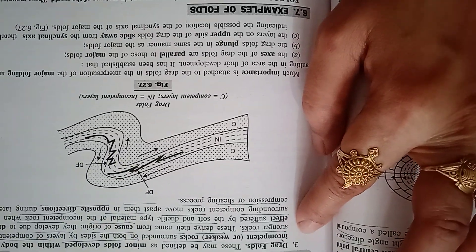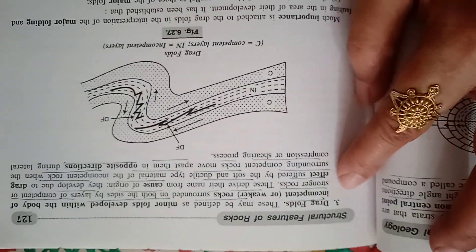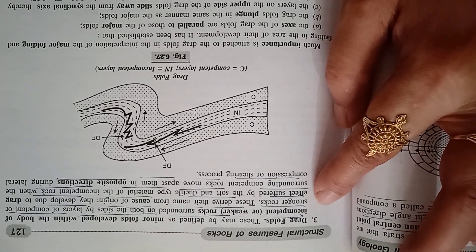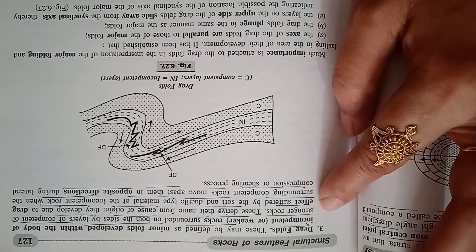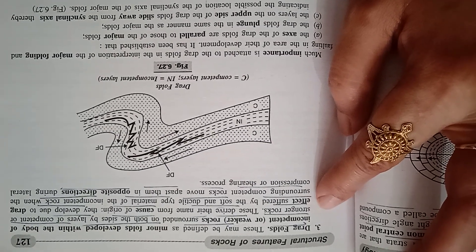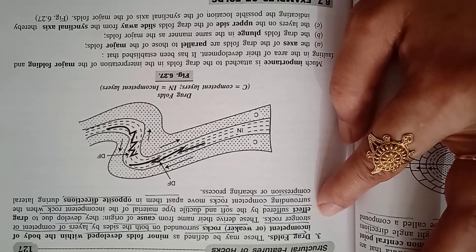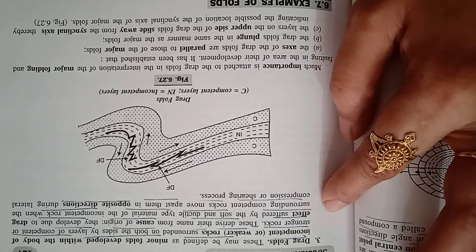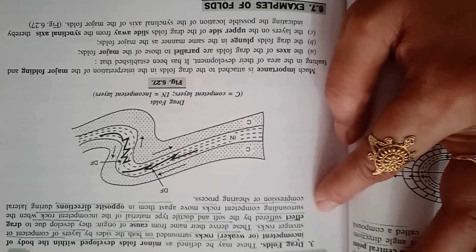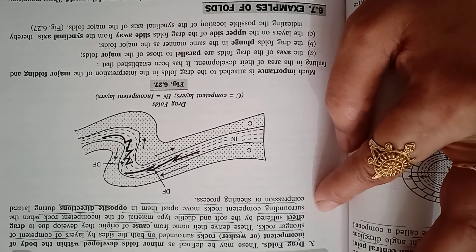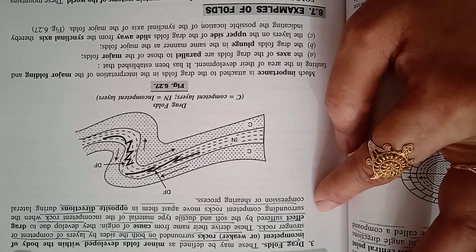These may be defined as minor folds developed within the body of incompetent or weaker rocks surrounded on both sides by layers of competent or stronger rocks. They derive their name from the cause of their development: the drag effect suffered by the soft and ductile materials of the incompetent rock.